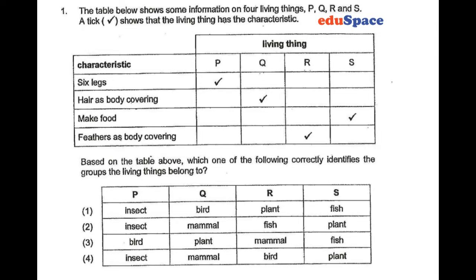In question one, we have a question on living things and its characteristics. Let's take a look at the table and see which of the following correctly identifies the group the living things belong to. In P, it has six legs, and clearly it must be an insect. Q has hair as body covering, so clearly it's a mammal.